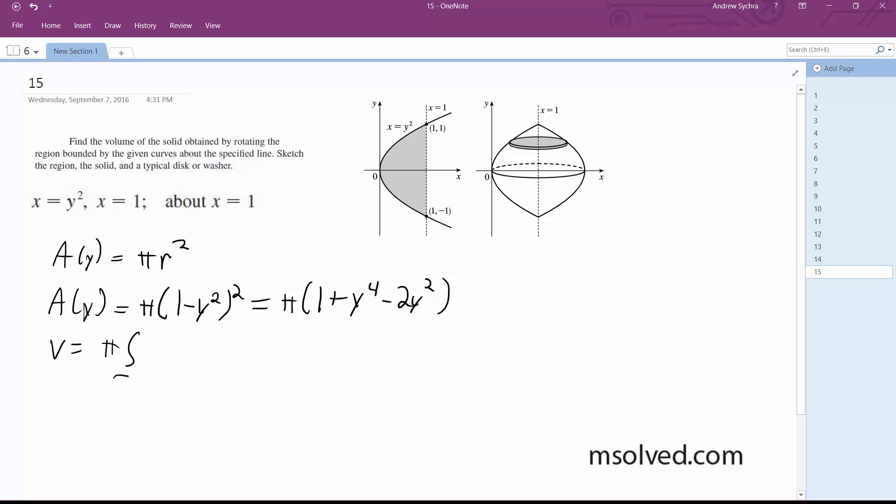So pi from negative 1 to 1, (1 plus y to the fourth minus 2y squared) dy equals pi times [y plus y to the fifth over 5 minus 2/3 y cubed].